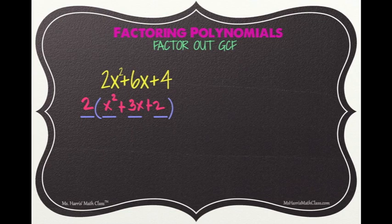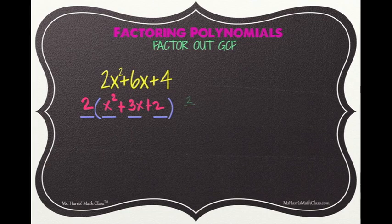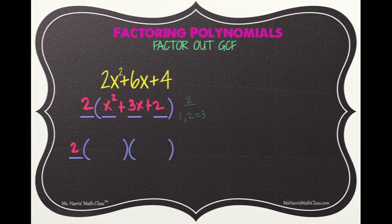The trinomial x squared plus 3x plus 2 can still be factored. We write out the factors of positive 2, which are 1 and 2, whose sum is 3 — so 1 and 2 are our factors. Bring down the GCF of 2. The factors of x squared are x and x, and we complete each binomial with positive 1 and positive 2. The final factors are 2, (x plus 1), and (x plus 2).